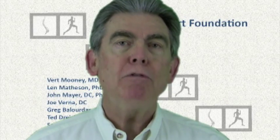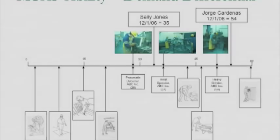Let me give you an example. Here we have Sally and Jorge placed along the same yardstick as they are hired by a manufacturing firm. Sally has a score on December 1, 2006 of 35, and Jorge's score on that same day is 54.